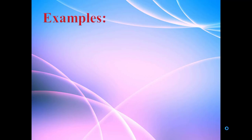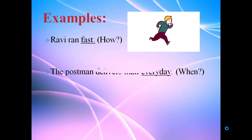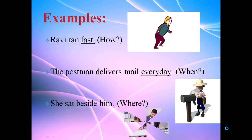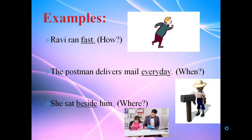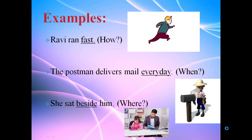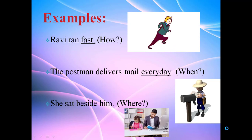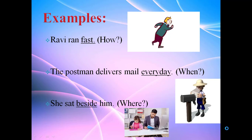Now we discuss some examples. Ravi ran fast. The postman delivers mail every day. She sat beside him. For the first sentence, Ravi ran fast, we frame the question with how: how did Ravi run? It answers: Ravi ran fast. For the second, we raise the question by when. For she sat beside him, we make a question by where.